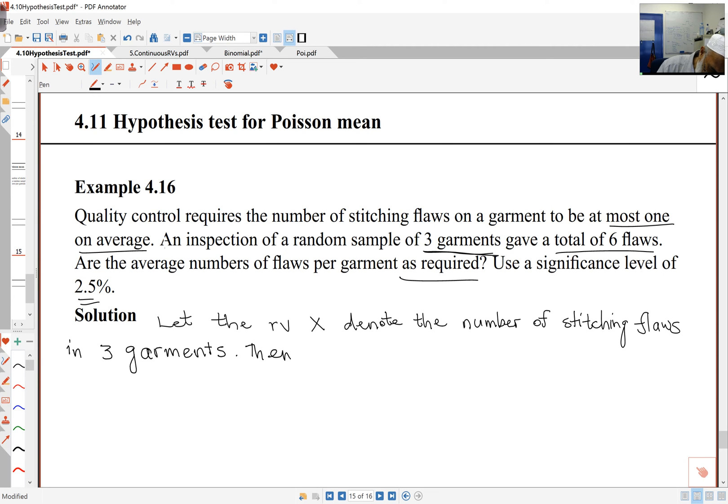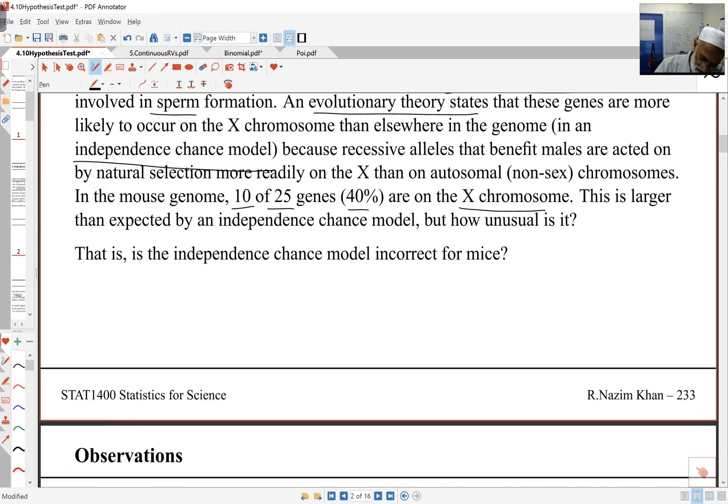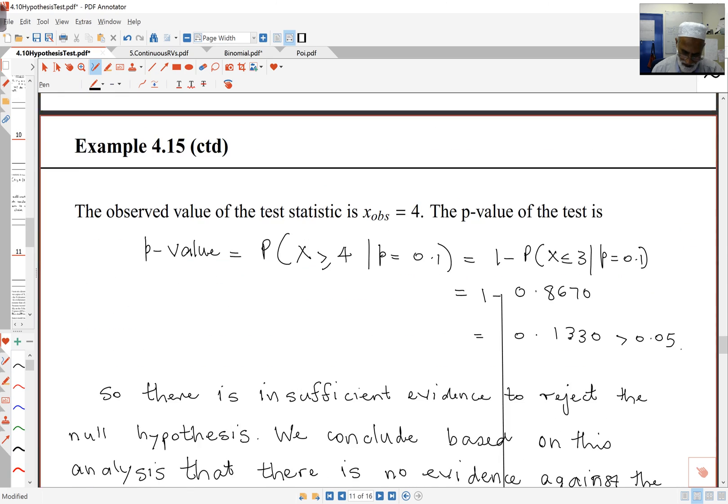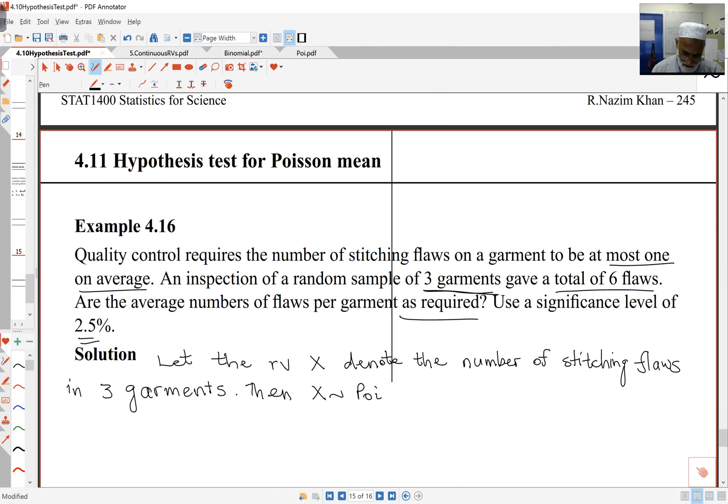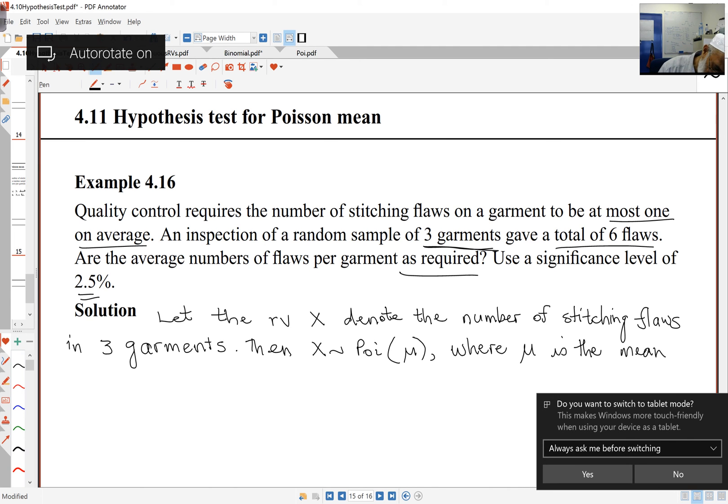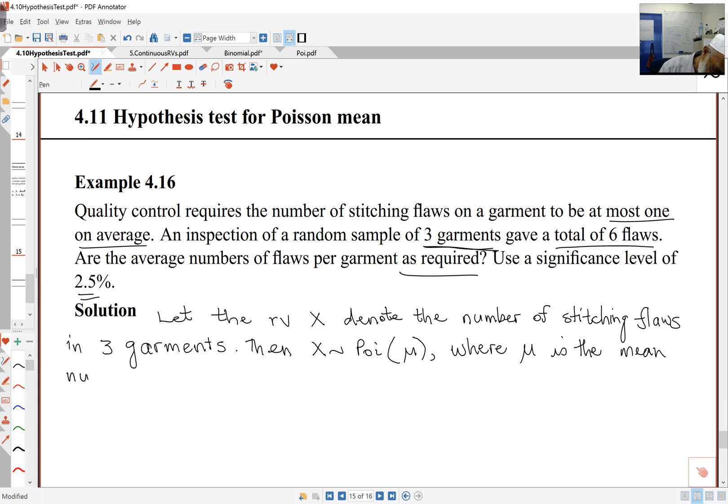We'll model X as Poisson, and the parameter here is mu. We'll define mu as the mean number of flaws in three garments.